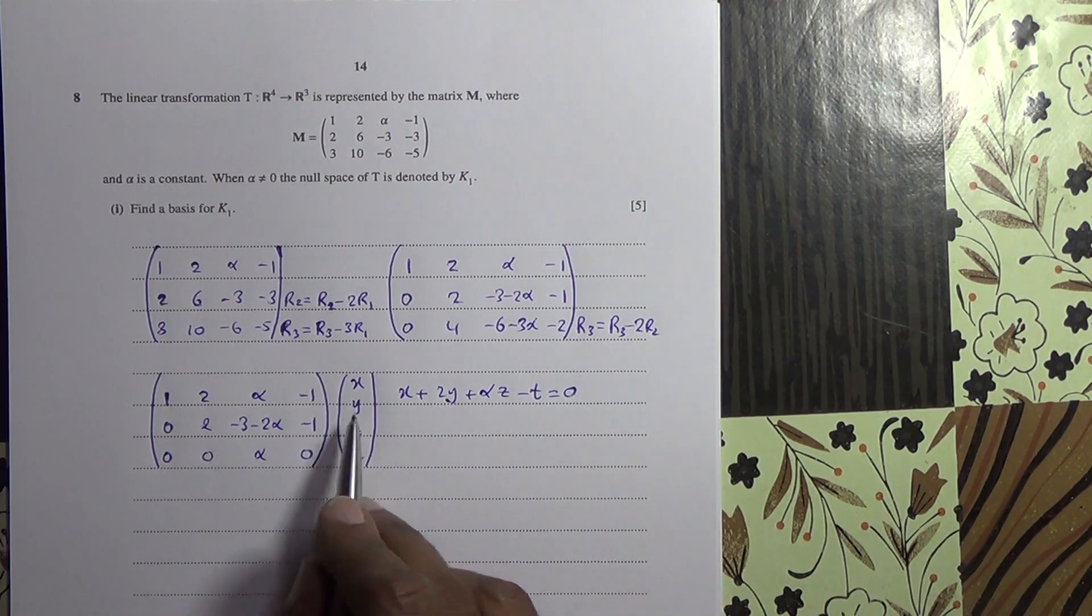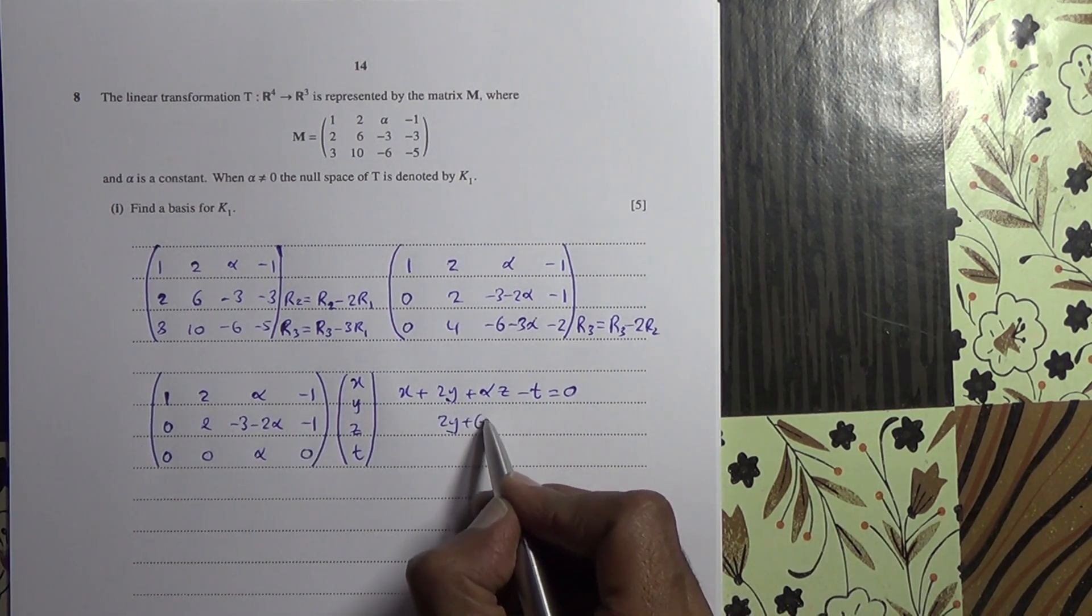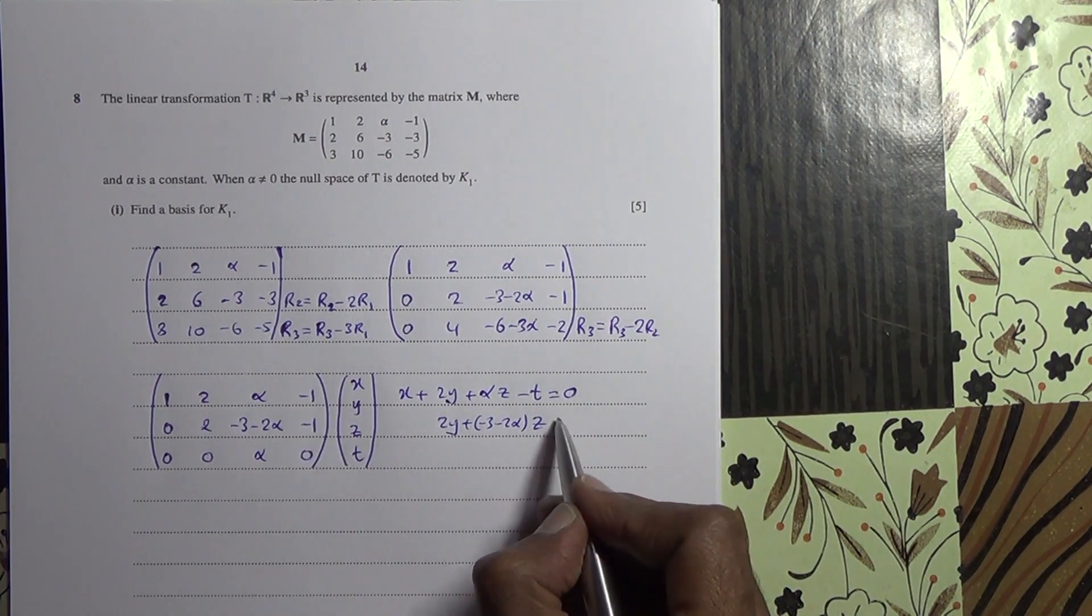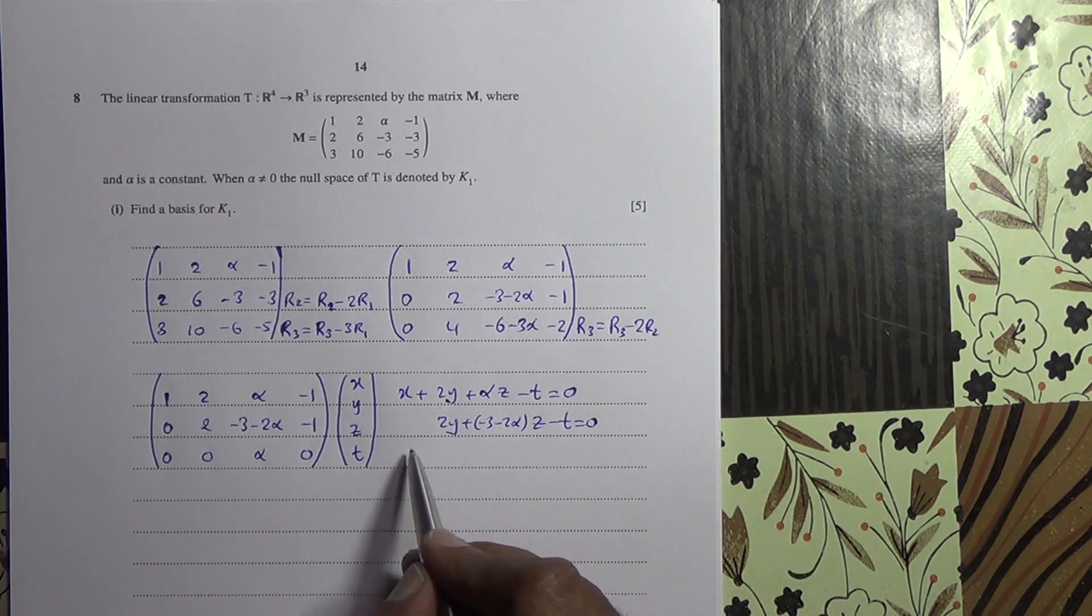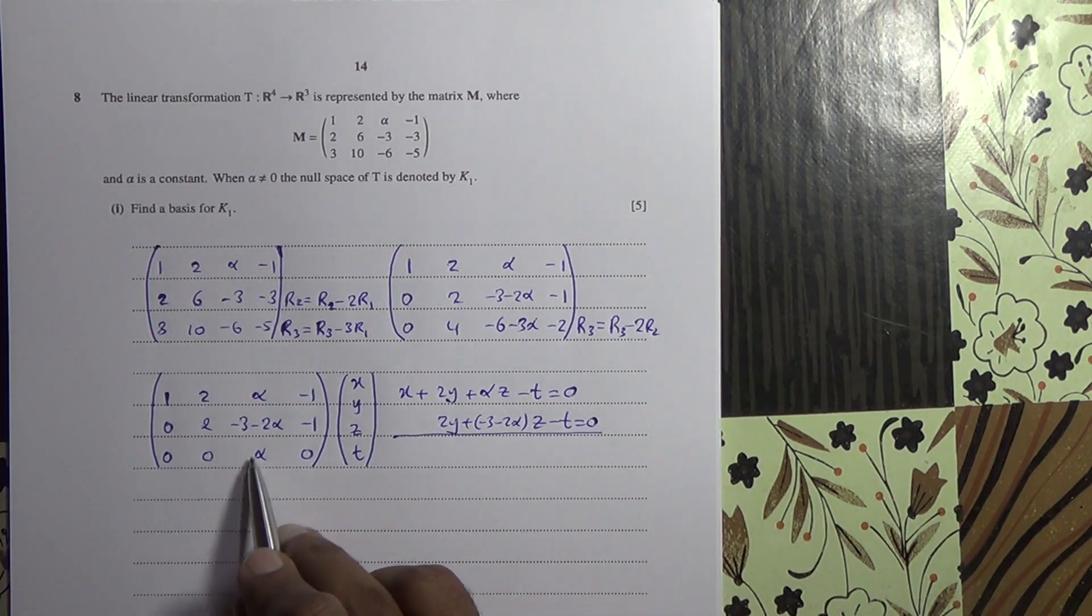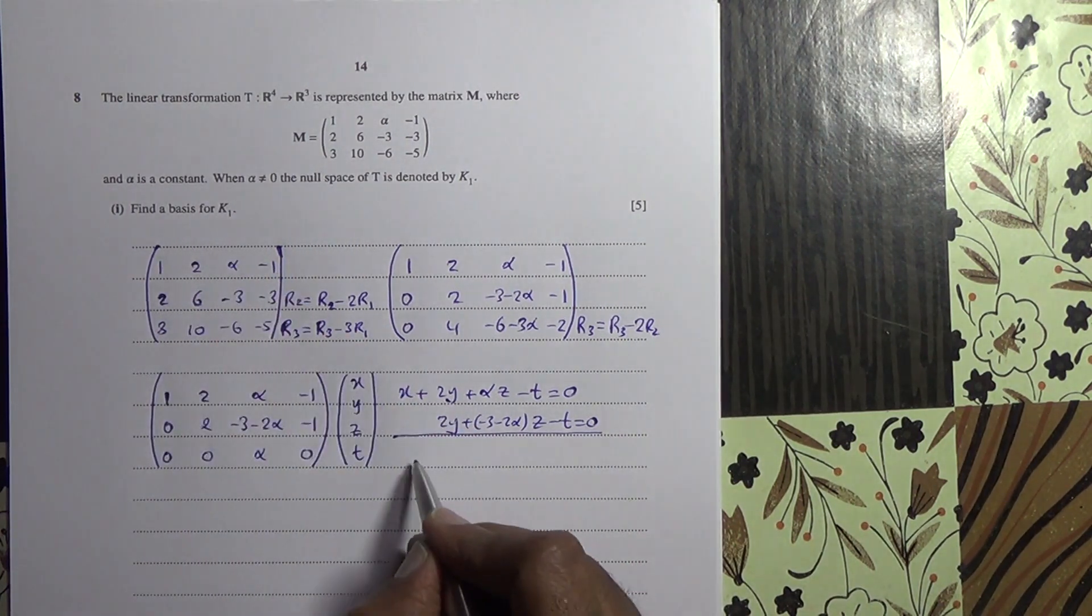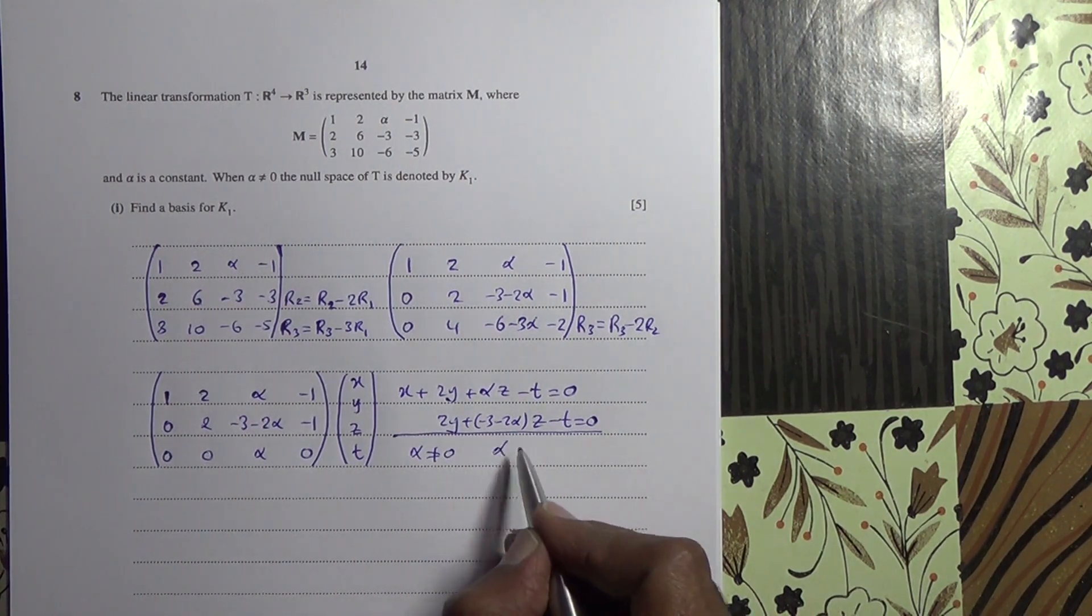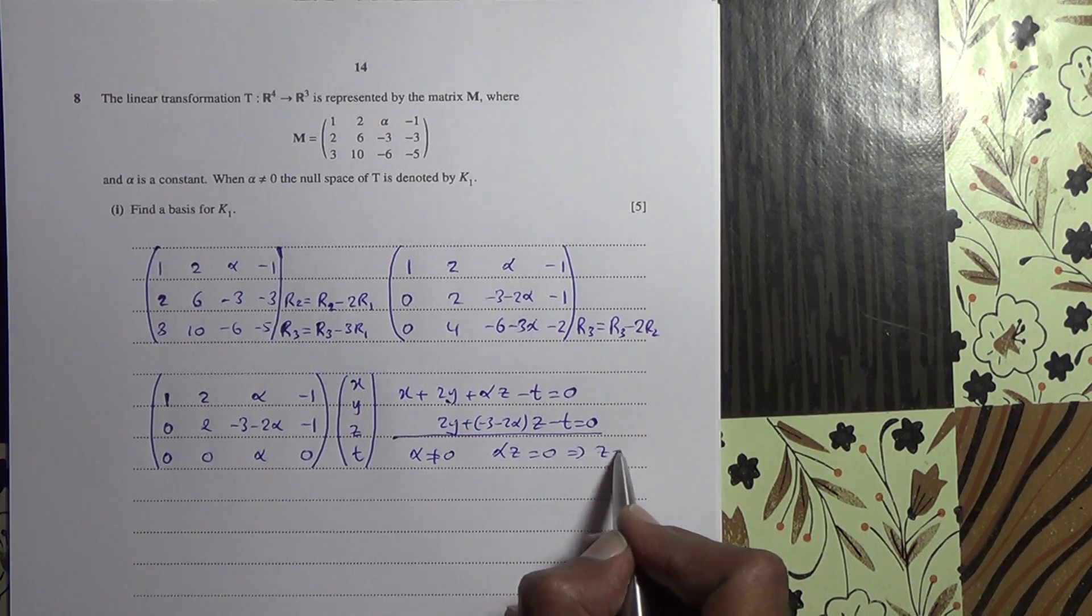Second one is 2Y minus 3, minus 2, plus minus 3, minus 2, alpha times Z, minus T, is equal to 0. And of course now, if we look carefully, we are told that alpha is not equal to 0. So if alpha is not equal to 0, it means alpha is something. So alpha Z is equal to 0, meaning that Z is going to be equal to 0.